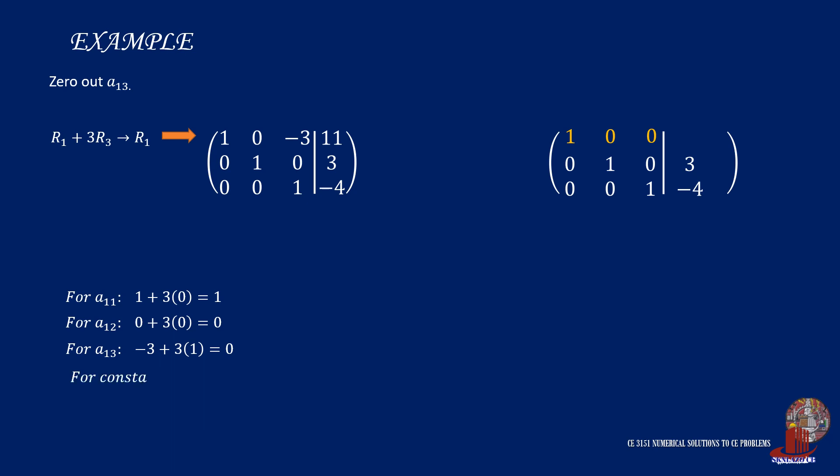For the last step in creating a reduced row echelon form, we zero out element 1,3, and that is done by taking row 1 and adding 3 times row 3 to make a new row 1. Starting with element 1,1, we have 1, then add 3 times 0 to keep 1. Then, at element 1,2, we have 0, then add 3 times 0 to come up with 0. Next is at element 1,3, which has negative 3. Then, we add 3 times 1 to give 0. And, for the constant, we have 11 plus 3 of negative 4 to turn out as negative 1.